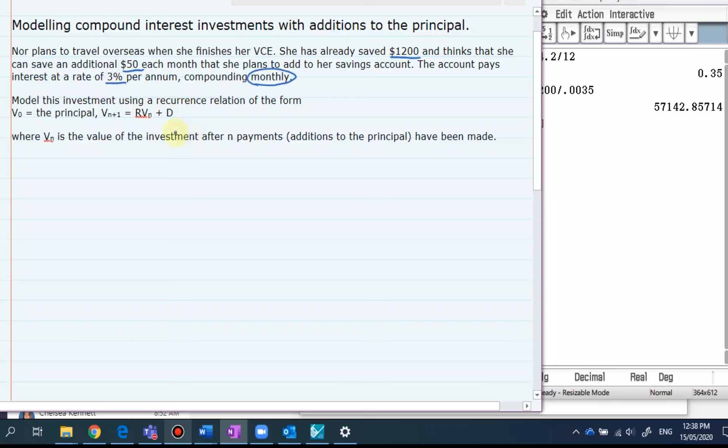So D is the constant change, a common difference every time. It doesn't change, that value doesn't change, so it's an absolute value. All right so we can write that as started with V0 is equal to the principal which Noor is putting in $1,200 and Vn+1 is equal to R.